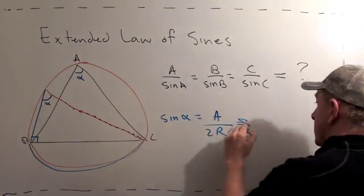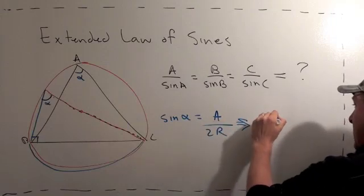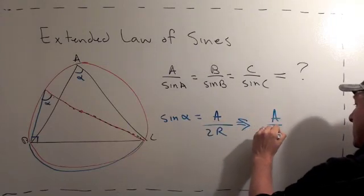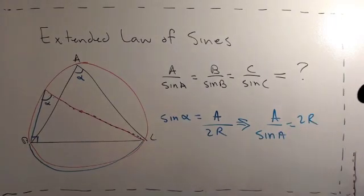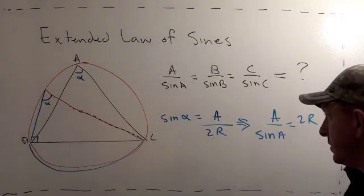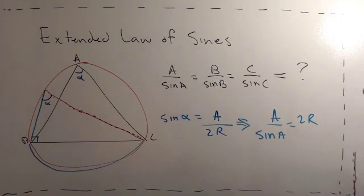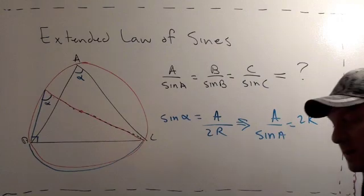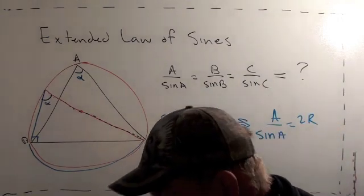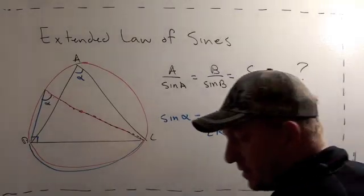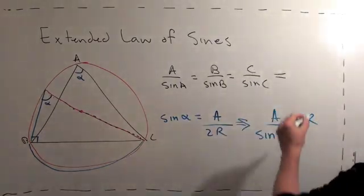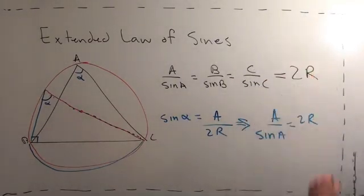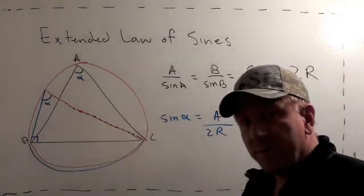So in other words, A over sine A equals two times the radius of the circumscribed circle of the triangle. So this is actually a fascinating result, and I have no idea why this isn't mentioned in any of the high school geometry books or high school trig books. It's a wonderful result.